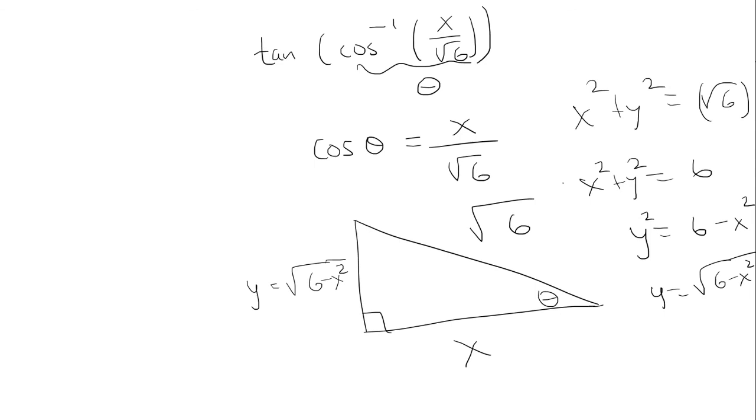Going back, I want to find tangent of this angle. Tangent is just opposite over adjacent, which in our case that's going to be square root of 6 minus x squared all over x.